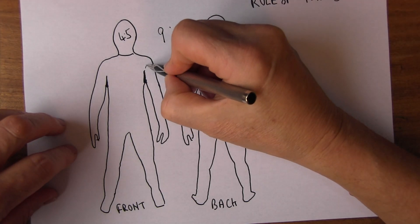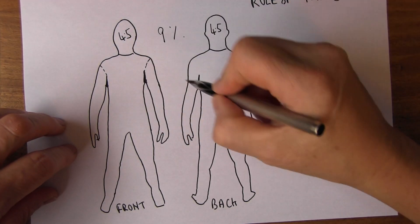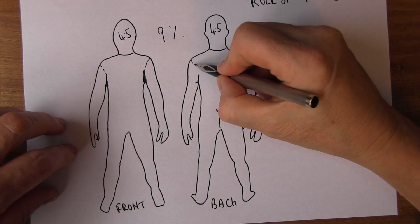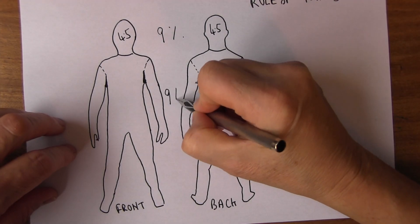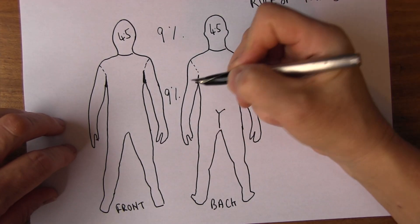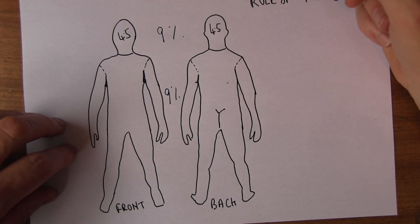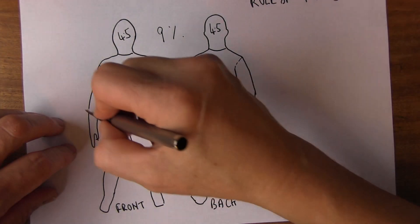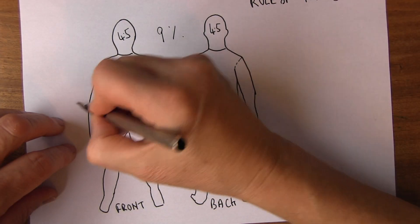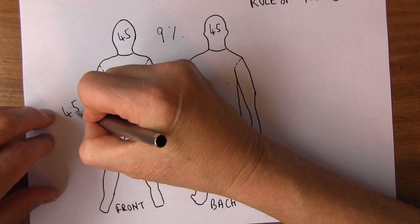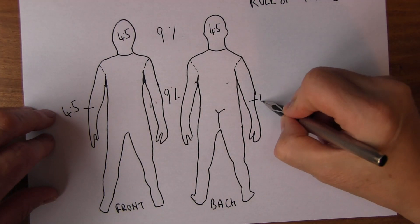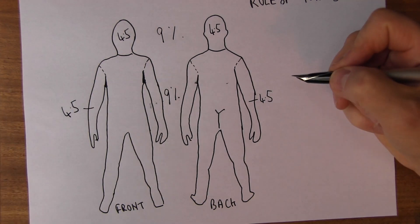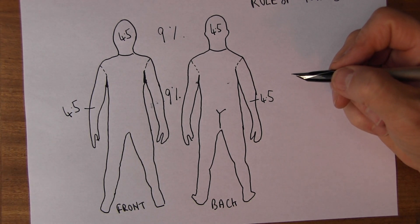Now the arms — a whole arm, an entire arm — is 9% of body surface area. So again, that means we're going to have 4.5% for the front of an arm and 4.5% for the back of an arm. 9% altogether.